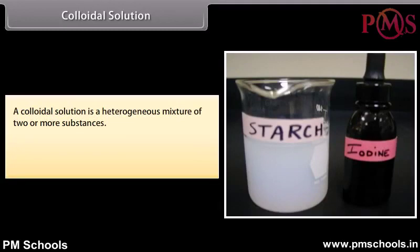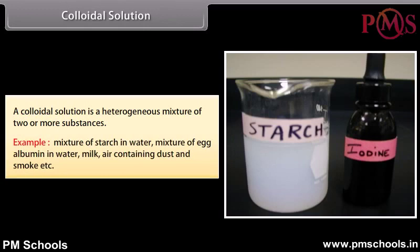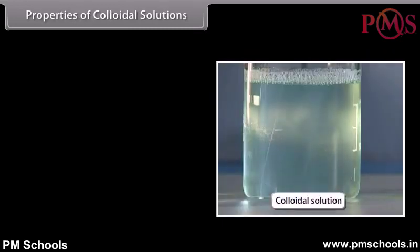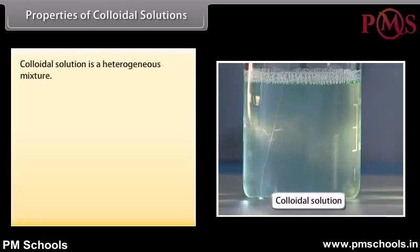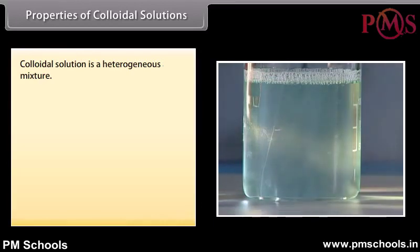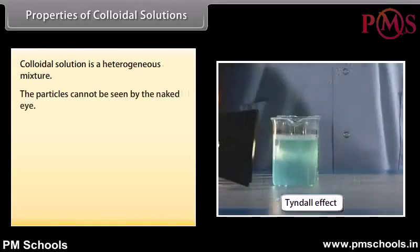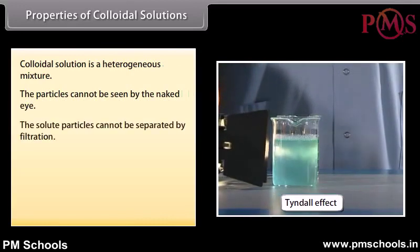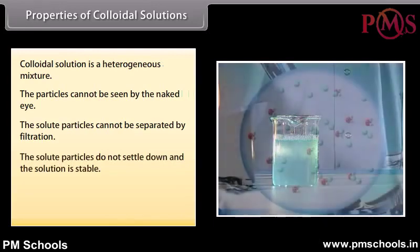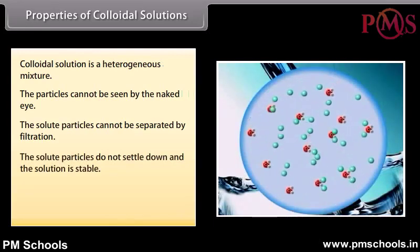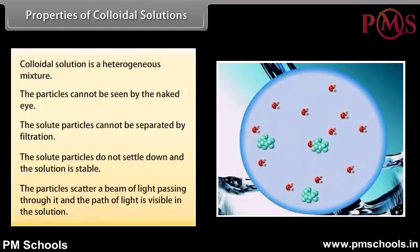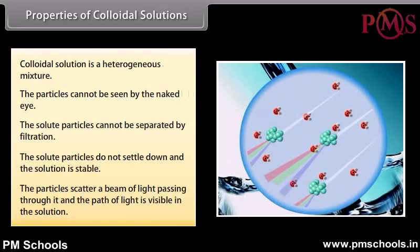A colloidal solution is a heterogeneous mixture of two or more substances. Examples include mixtures of starch in water, egg albumin in water, milk, and air containing dust and smoke. Properties: the particles cannot be seen by the naked eye and cannot be separated by filtration. The solute particles do not settle down and the solution is stable. The particles scatter a beam of light passing through it, and the path of light is visible in the solution.